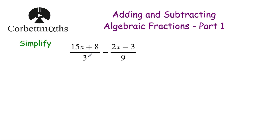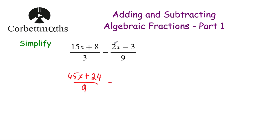So let's multiply both the numerator and denominator of the first fraction by 3. Multiplying the denominator by 3 gives 9. For the numerator: 3 times 15x is 45x, and 3 times 8 is 24. So (15x + 8)/3 becomes (45x + 24)/9. Then we subtract — the second fraction already has 9 on the denominator, so we just write it out as (2x − 3)/9.